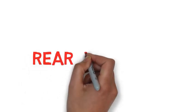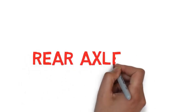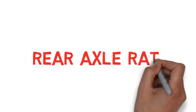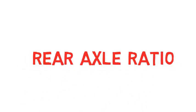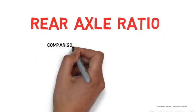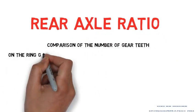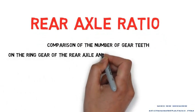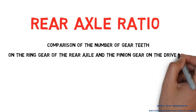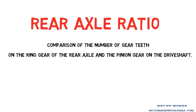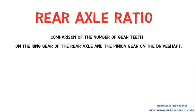Today we are going to learn how to calculate rear axle ratio. The simple explanation is a comparison of the number of gear teeth on the ring gear of the rear axle and the pinion gear on the drive shaft.